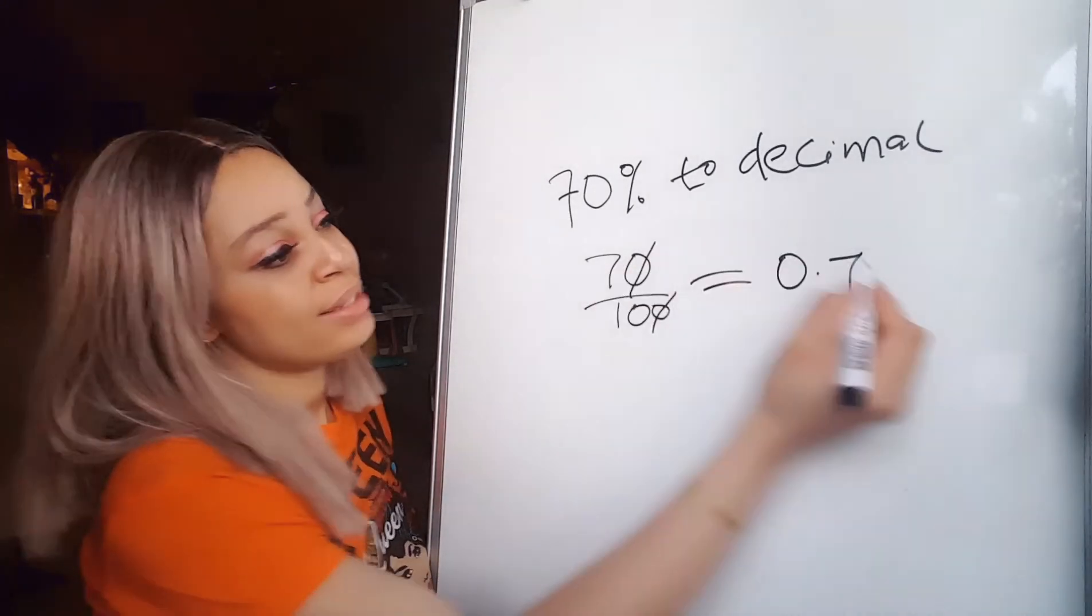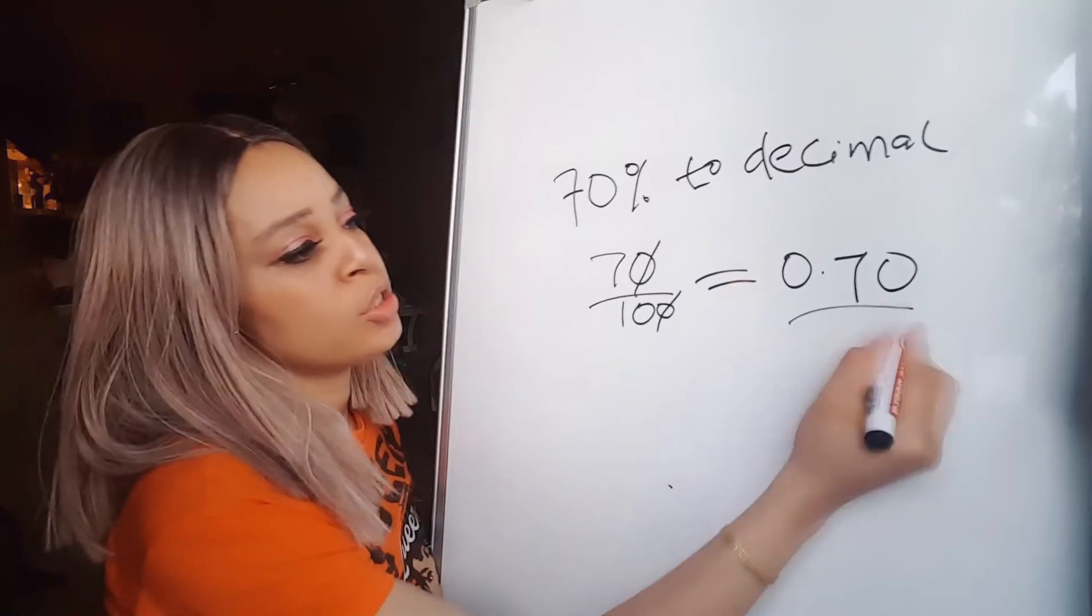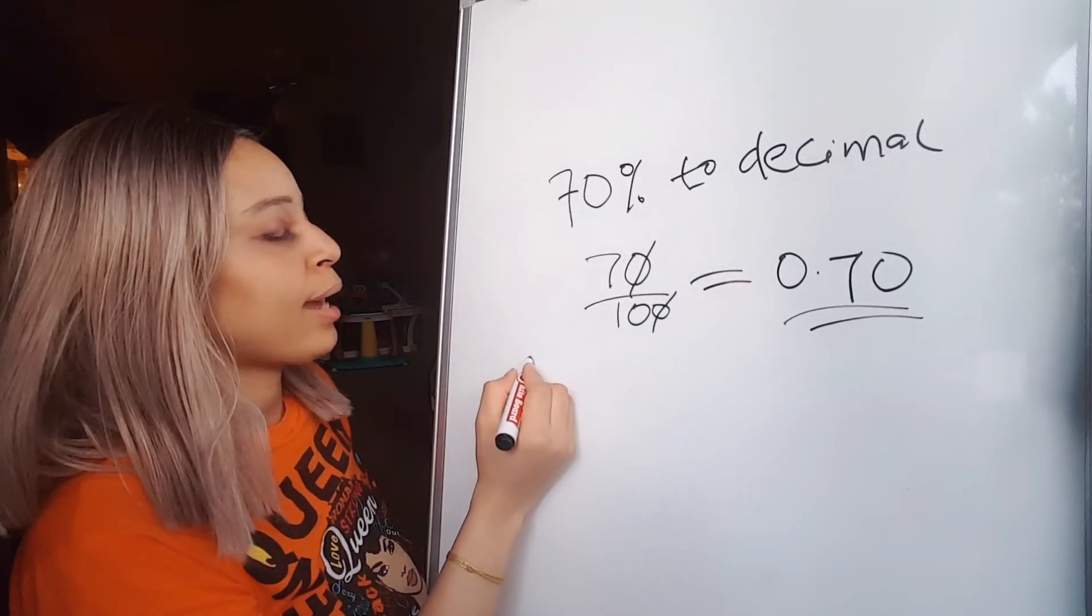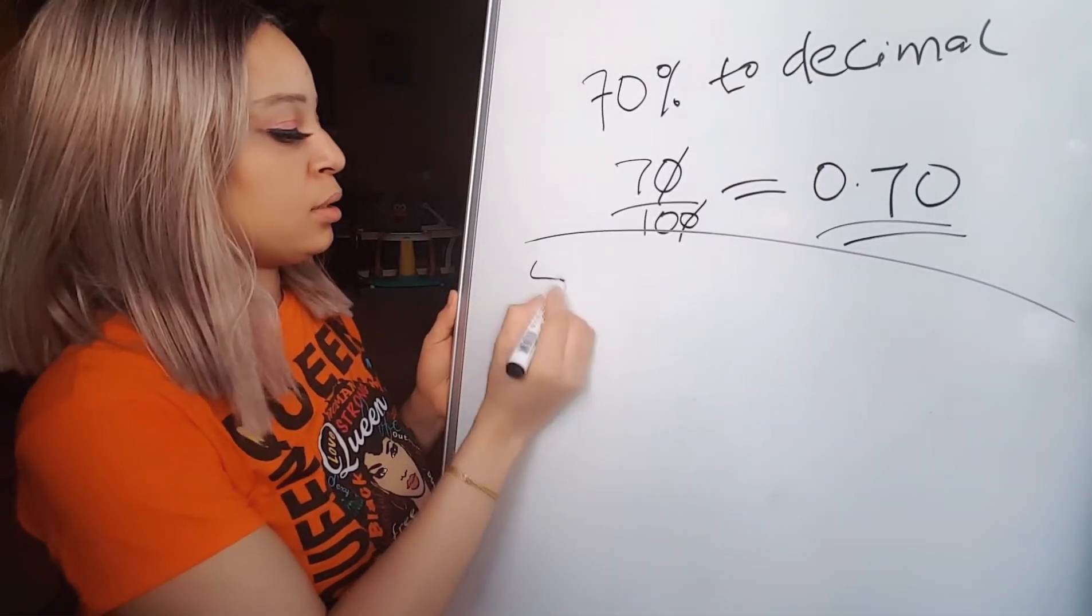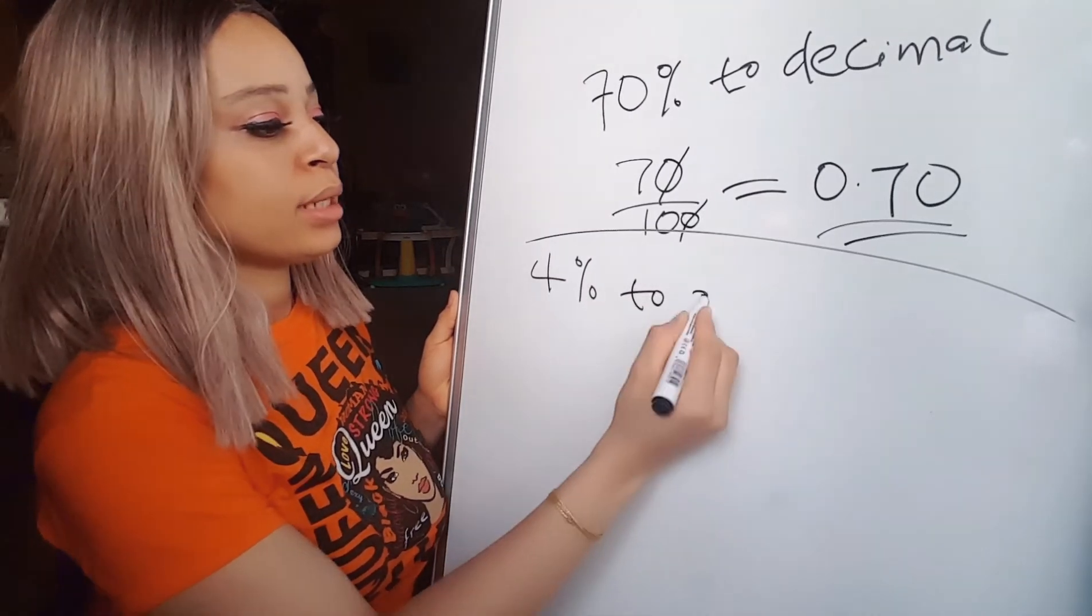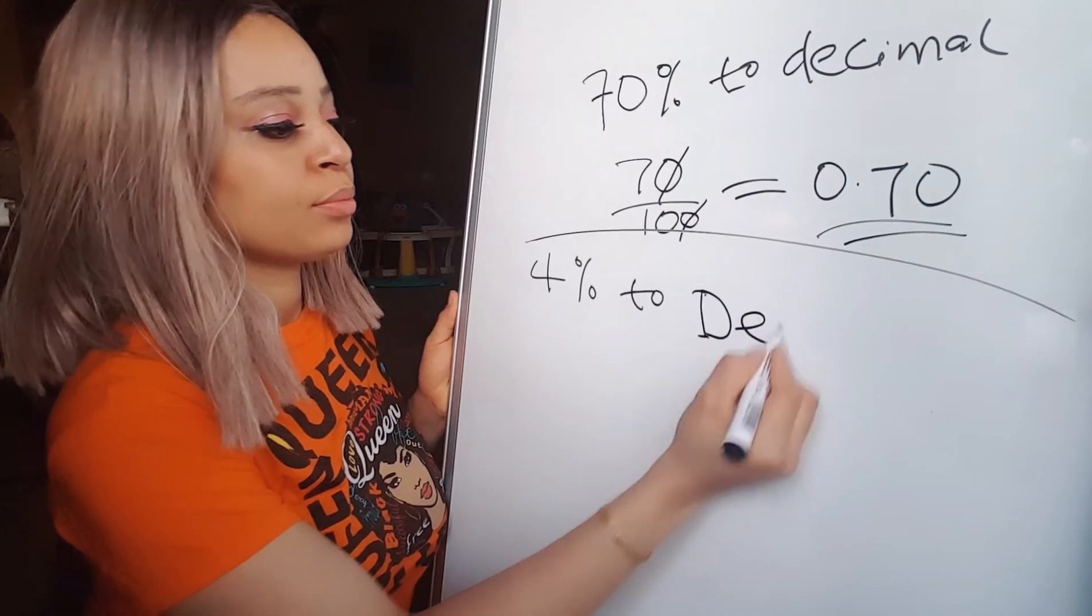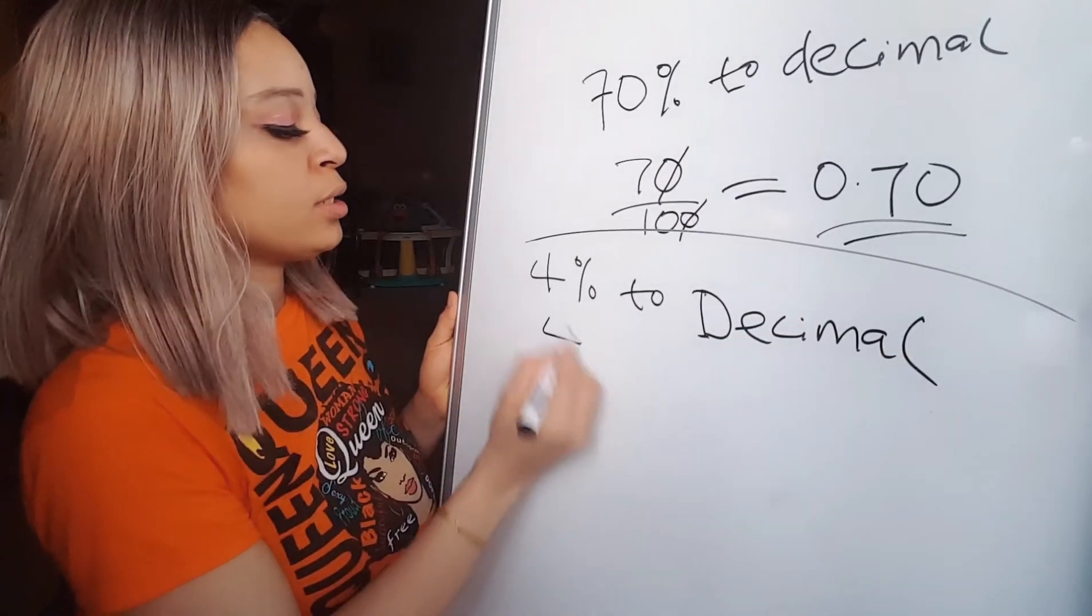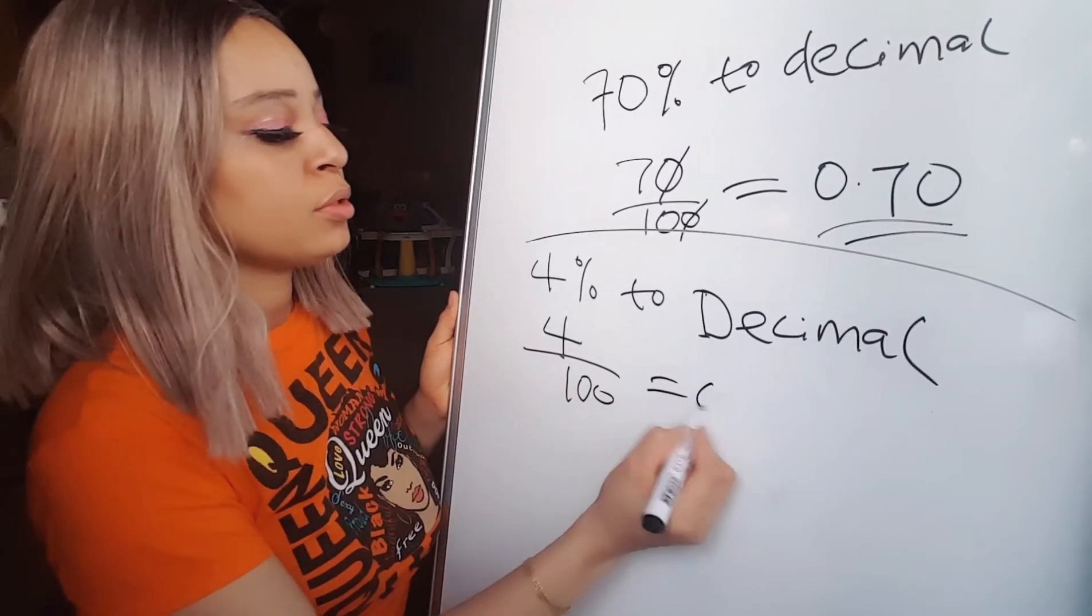Yeah, you can add the zero if you want, that's okay. So that's it. Oh, you may be given like 4 percent. Percent to decimal, sorry, to decimal. All you gotta do is 4 over 100 to give you 0.04.